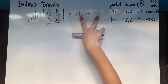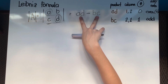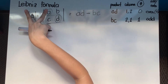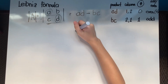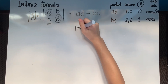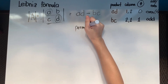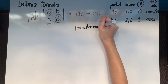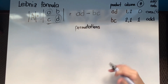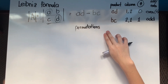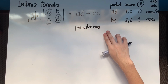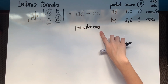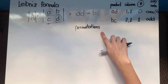Therefore the determinant is positive 'ad' plus negative 'bc', or simply 'ad minus bc'. That is how the Leibniz formula works — it is based on permutations, which is why it can be difficult to elaborate without a solid background in permutations.